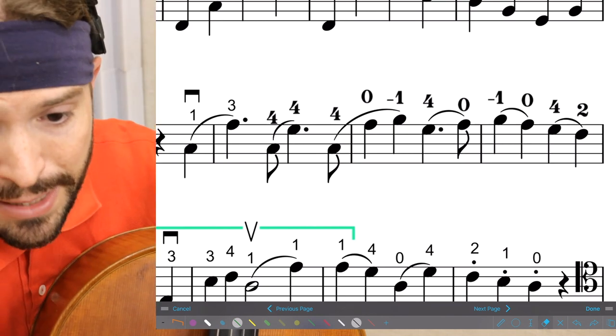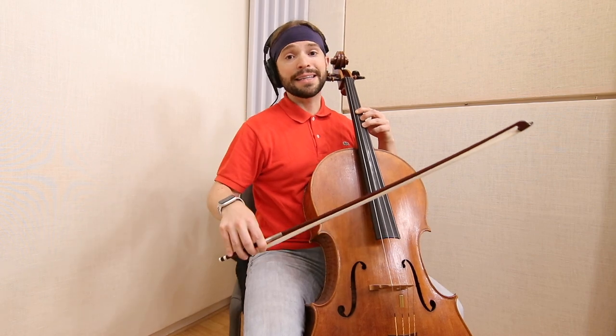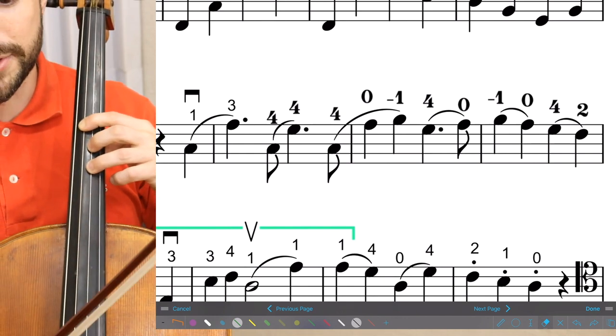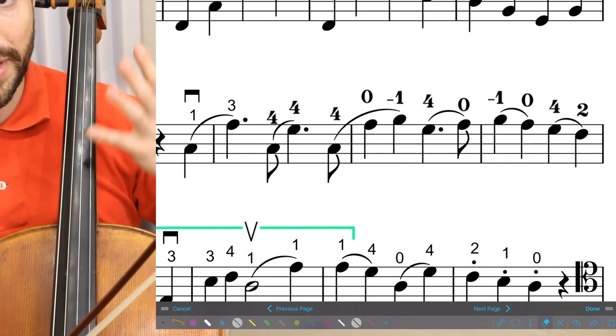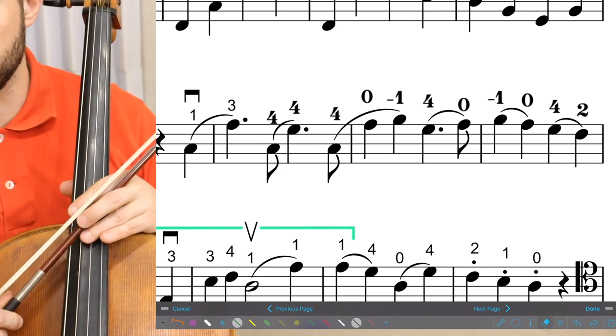And those two notes not only eliminate the string cross, it makes it easier for the bow and it makes it easier for our fingerings. So it's something essential to understand: we make fingerings not only to make the fingers play with less effort, we do it also so that our bow uses less effort.